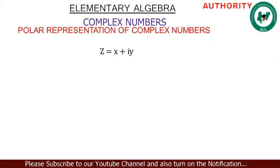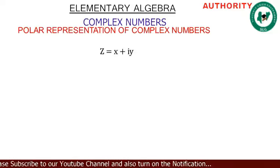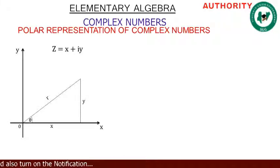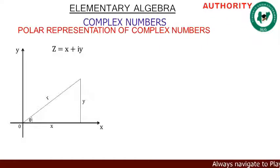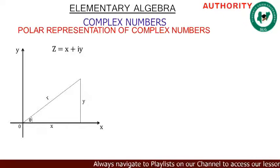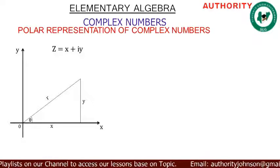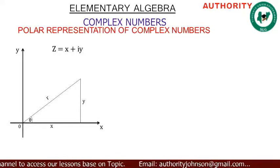We have a complex number z in the form x plus iy. On a diagram we have the x-axis and the y-axis, where we can identify x and y. We also have r here — r simply means the resultant. In the complex number system we call it the modulus, the magnitude, or the modulus.